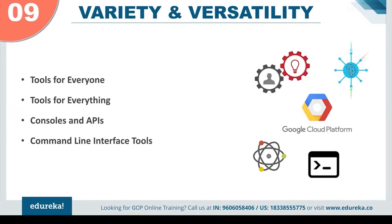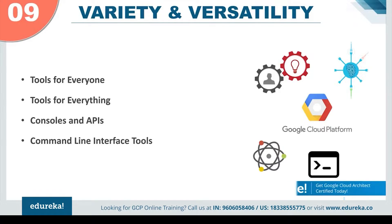Coming up to reason number nine, we have variety and versatility. Once you get started on the Google Cloud Platform, there are tools for everyone and for everything in the IT industry. You can use all these products for development like the developer's console, web UI, and the command line interface tools to work in the Windows, Mac or Linux environment. You also have the option to use the RESTful APIs. Google has its own set of managed APIs that can be used in different applications for different purposes, and these APIs are very easy to work with.